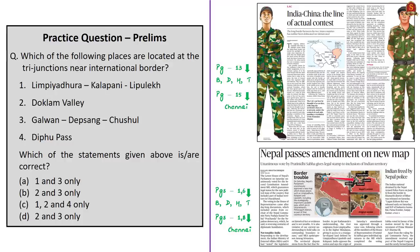The next question is based on places located at the trisections near international borders. The places given are: Limpia Dhura, Kalapani, Lipulekh Pass, Doklam Valley, Galwan, Depsang, Chushul, and Diphu Pass.